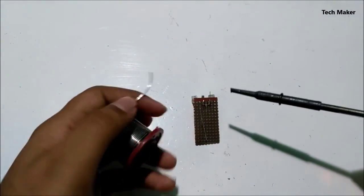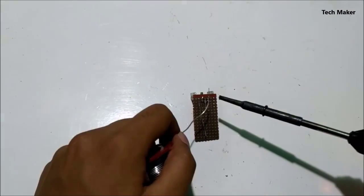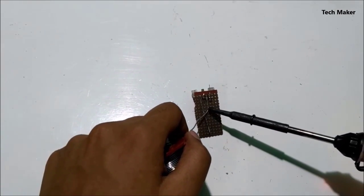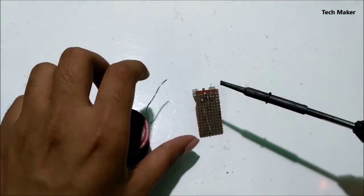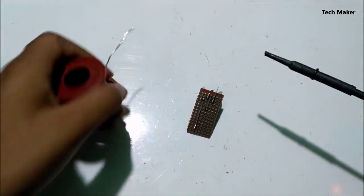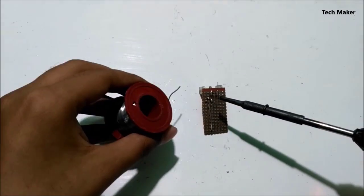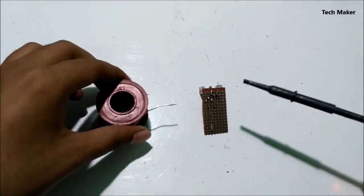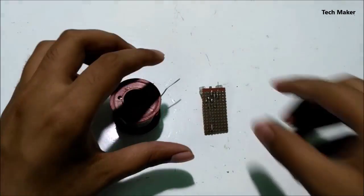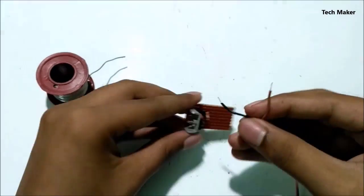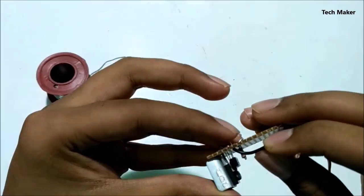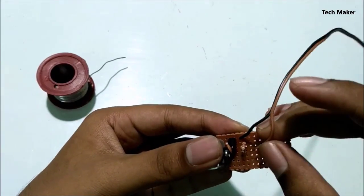Now solder these components according to the circuit. These are the wires for battery, solder it carefully to the PCB according to the schematic.